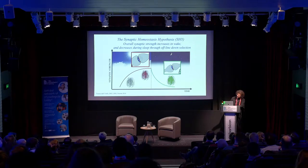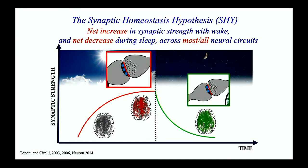That's the general idea. For this idea to be correct, it has to be true that there is a net imbalance — that by the end of the major waking period, you have a net increase in synaptic strength in many circuits, not just one. If this is true only in a specific small region of the brain, then that's not the function of sleep. And then you have a net decrease during sleep.